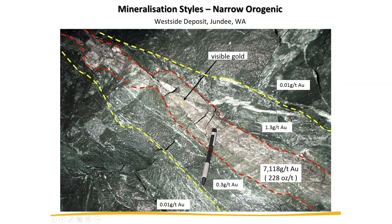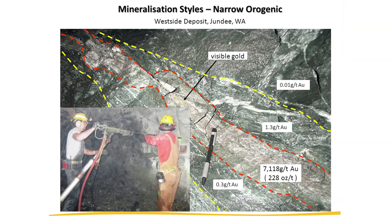This is another extreme example of a deposit — the West Side deposit at Jundee. You can see the pen there for scale, but the rock in the middle is 7 kilograms per tonne. That's quite astounding with not much either side of it. A tonne of rock is roughly a cubic metre, and 7 kilos of gold — the standard bank vault bullion bar is 12 kilos — so you're looking at about half a house brick of gold in one cubic metre of rock. To mine that you're obviously going to have to take some of the wall rock either side and dilute it. To minimise this, there's a process called air legging — a big pneumatic drill that gets as much of that high-grade rock out as possible.